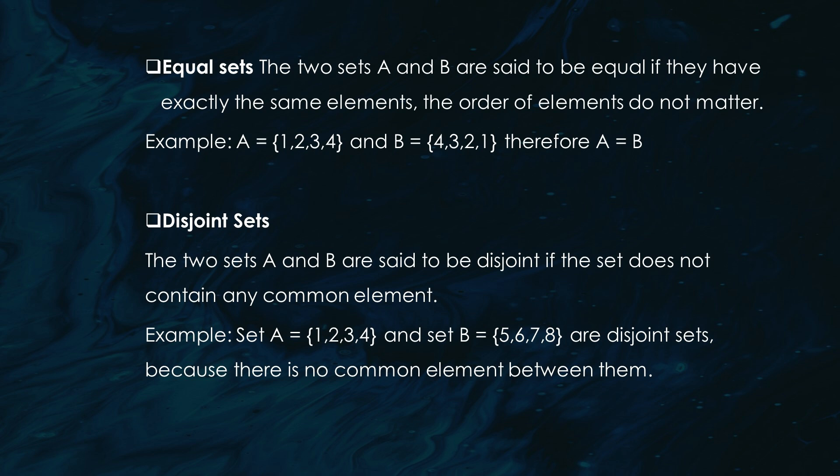Here's where things get interesting — sets can be equivalent or equal. If two sets have the same number of elements, they're called equivalent sets. For example, set A = {1, 2, 3, 4} and set B = {red, blue, green, black} — they have the same number of elements, so A is equivalent to B. But if they have exactly the same elements, they're equal sets. For example, set A = {1, 2, 3, 4} and set B = {4, 3, 2, 1} — here A is equal to B, no matter the order.